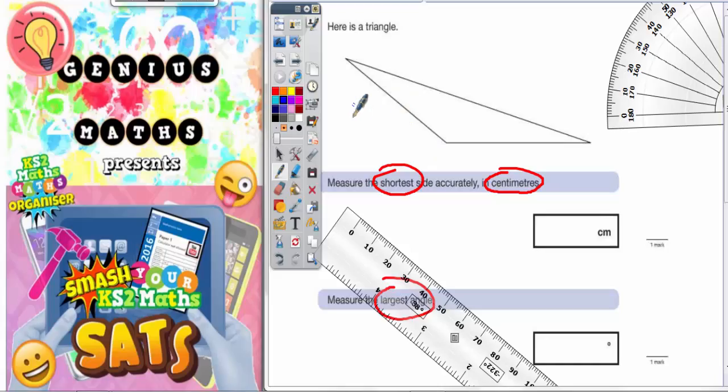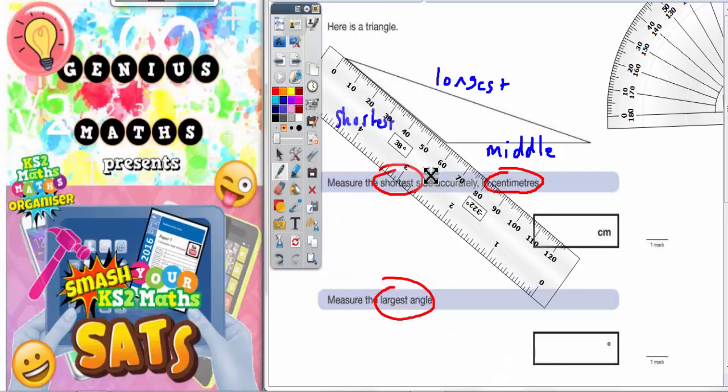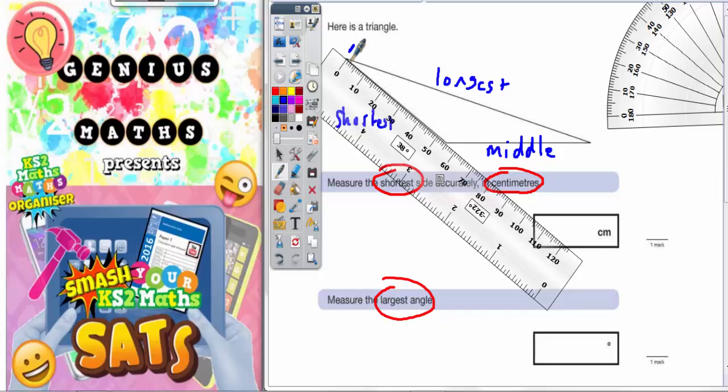This one's the shortest, this one's the longest, and this is the middle side. You can probably tell that just by looking at it or using a quick test with your fingers. So get the ruler, place it over the shortest side, making sure that zero is level with the start of the line there.